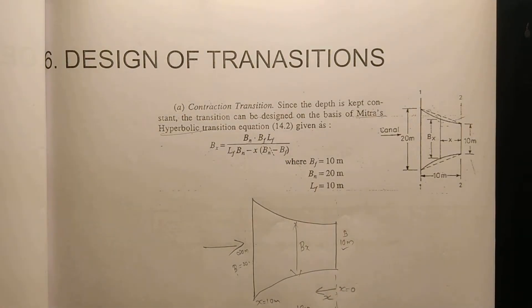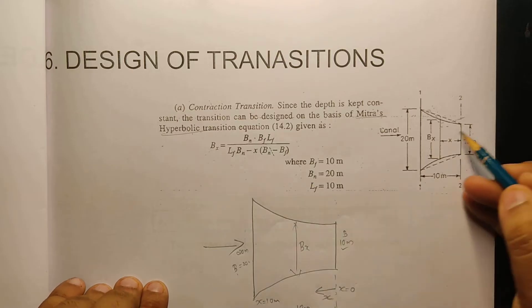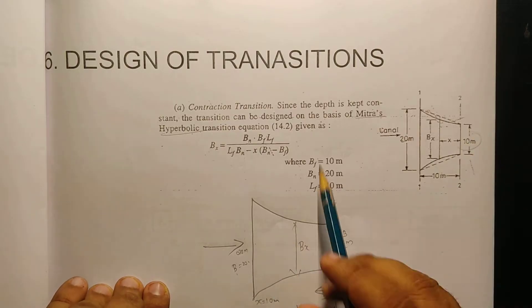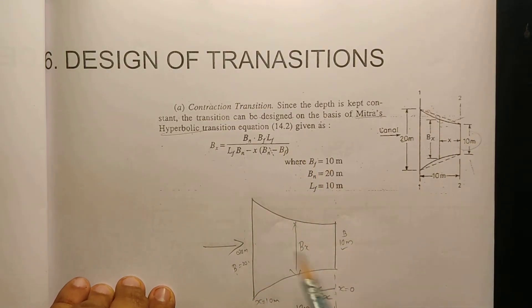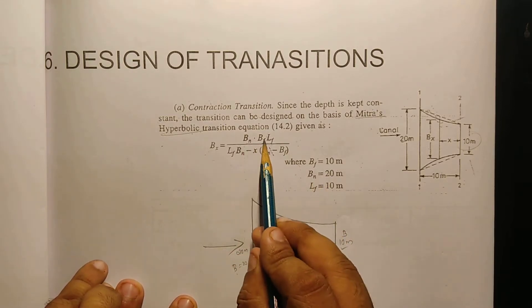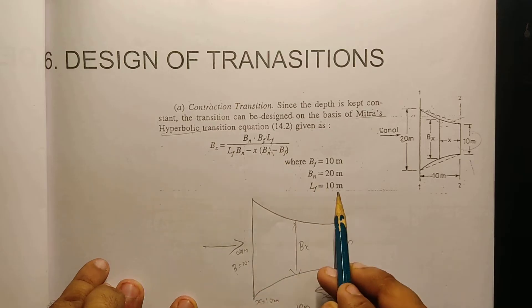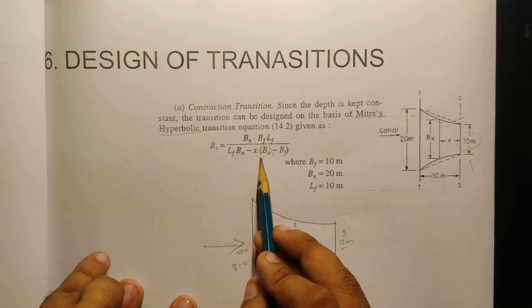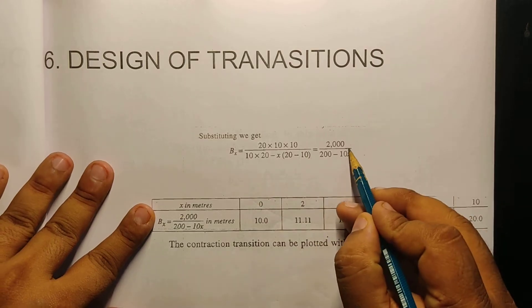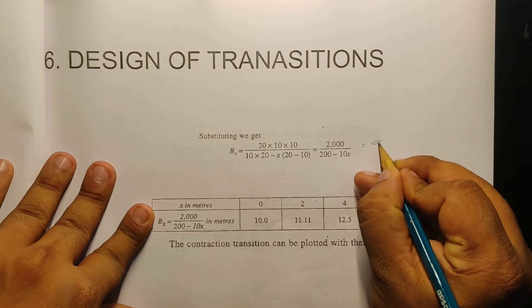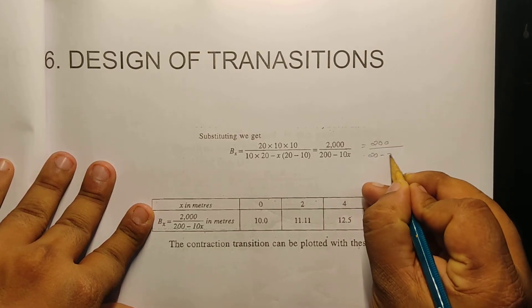Now, what is Bn? It is the natural section — 20 meters. Bf is the flume width — 10 meters. Lf is the length of transition — 10 meters. Substituting: Bx equals 20 into 10 into 10, divided by 10 into 20 minus x into 20 minus 10. This simplifies to 2000 divided by (200 minus 10x), which further reduces to 200 divided by (20 minus x).